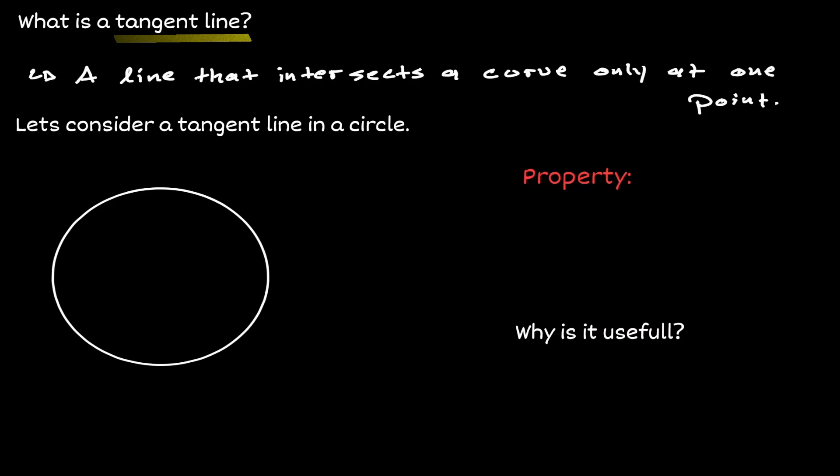Now let's consider the curve to be a full circle. This blue line cannot be considered a tangent line because notice that it's intersecting the circle at two locations.